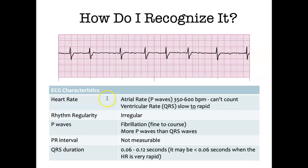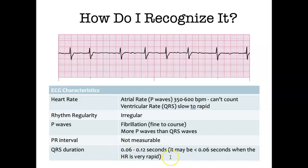To recognize atrial fibrillation: you can't measure or count the fibrillation waves. The ventricular rate can be slow to rapid — here the ventricular rate is 80 beats per minute while the fibrillation rate is much quicker. The rhythm regularity is irregular. P waves are fibrillation waves — either fine or coarse; coarse ones can look like flutter. There are more P waves than QRS complexes, the PR interval can't be measured, and the QRS complex tends to be within normal range but can be less than 0.06 seconds when the heart rate is very rapid.